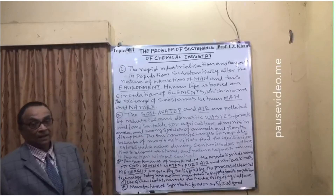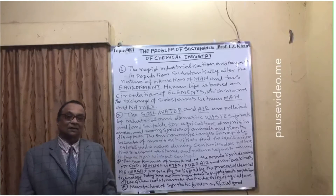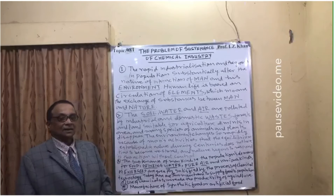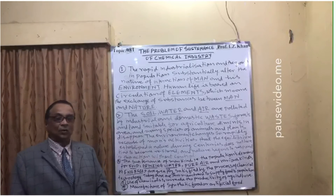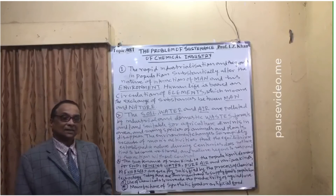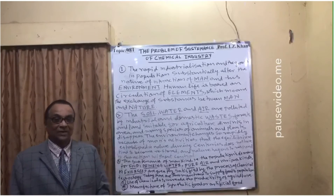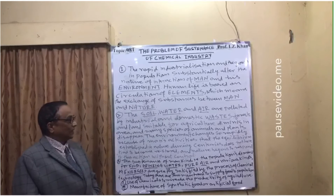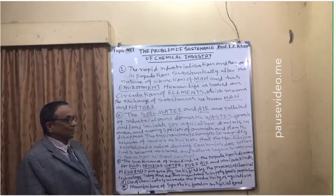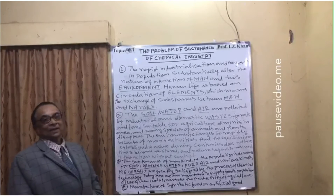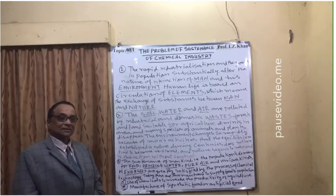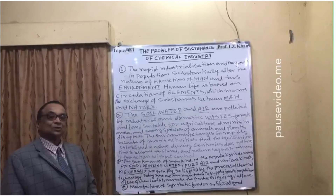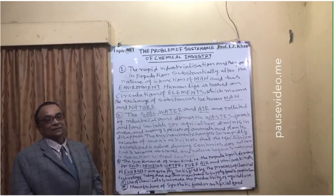Forest and land suitable for agriculture is diminishing in area, and many species of animals and plants are also disappearing. Because of changes in climate, the environment is no longer suitable for many invertebrates, vertebrates, and some plants, and they are disappearing from this planet.